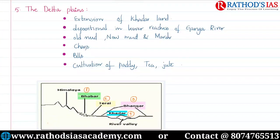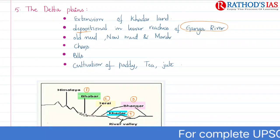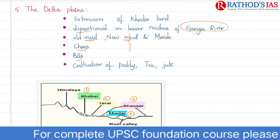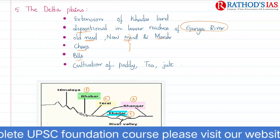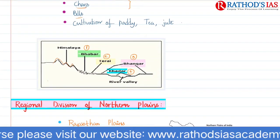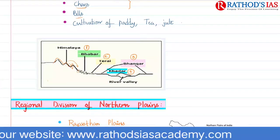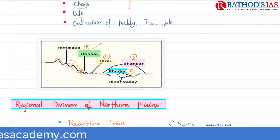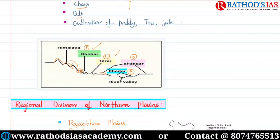The fifth and last physiographic division is Delta Plains, which are an extension of the Khadar lands. It is a depositional feature mainly seen in the lower reaches of River Ganga. We can see older mud, newer mud, marshy areas, chars, and bills in the Delta Plains. This delta is the most fertile and is used for cultivation of paddy, tea, and jute. In the diagram, from the Himalayas, river systems bring sediments — bigger boulders settle first (Babbar), then smaller particles (Terai), while older alluvial deposits on both sides are Bangar and newer deposits are Khadar.